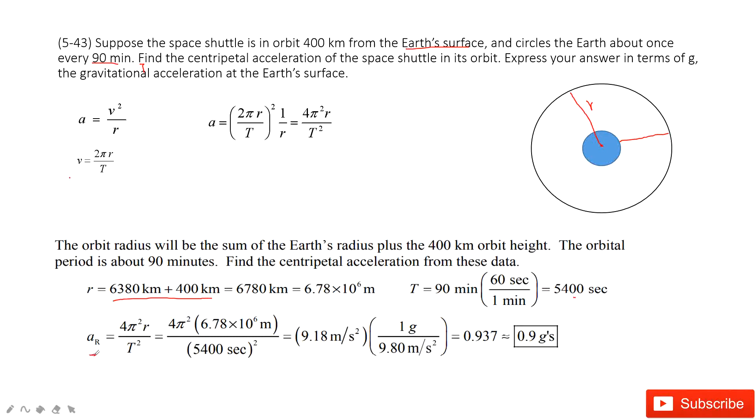We can find this centripetal acceleration. And then we need to convert it in terms of g. g is 9.8 meters per second squared. So 1g is 9.8 meters per second squared. Therefore, you get it is just 0.9g. Thank you.